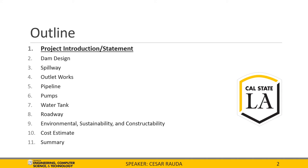To go over an outline of the presentation, we will start with a project statement, then a project introduction, then move to the dam design, then the spillway, outlet works, pipeline, pumps, water tank, roadway, then have a section for environmental, sustainability, and constructability. After that, we will go over the cost estimate of the project and conclude with the final summary.